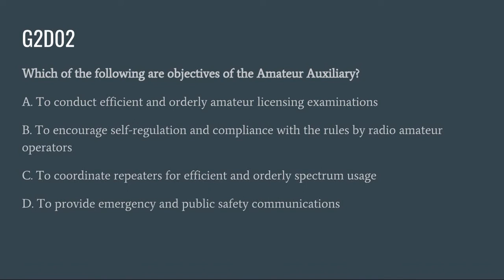G2D02: Which of the following are objectives of the amateur auxiliary? A. To conduct efficient and orderly amateur licensing exams. B. To encourage self-regulation and compliance with the rules by amateur radio operators. C. To coordinate repeaters for efficient and orderly spectrum use. Or D. To provide emergency and public safety communications. The correct answer is B: to encourage self-regulation and compliance with the rules by radio operators.